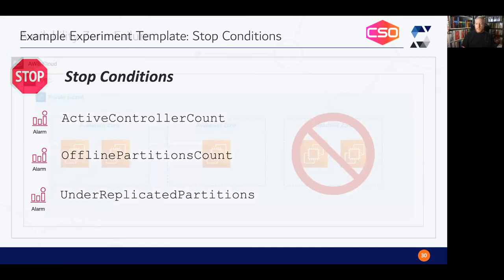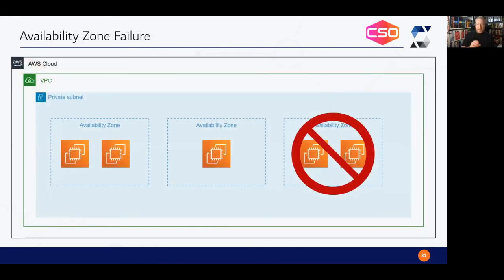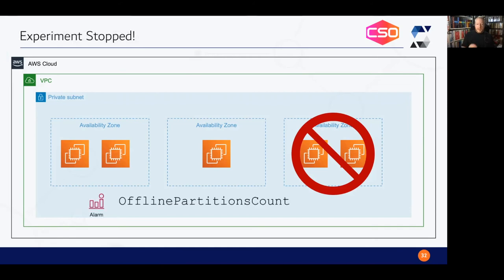We run our experiment. All Kafka instances in the availability zone are terminated, and we wait — perhaps 10 minutes or half an hour. But after a few moments, the offline-partitions-count alarm triggers. We have partitions that have gone offline because two nodes are unavailable. And even though we still have three nodes left, something in our configuration is not right. The hypothesis has failed — we have not been able to withstand the loss of two Kafka nodes.